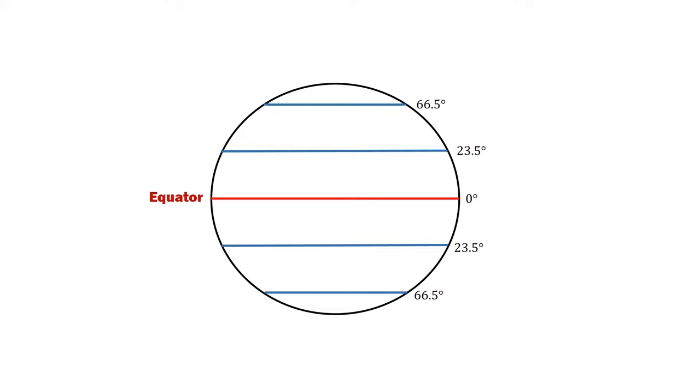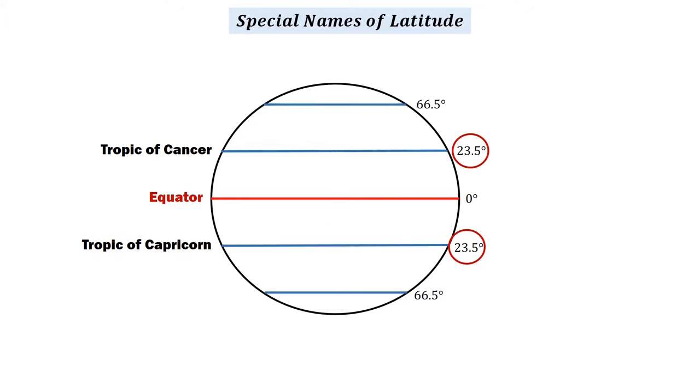Latitudes have special names. At 23.5 degrees north, the Tropic of Cancer is located, while at 23.5 degrees south is where the Tropic of Capricorn can be found. These zones are tropical zones. The countries that are located in these zones experience a warm climate.